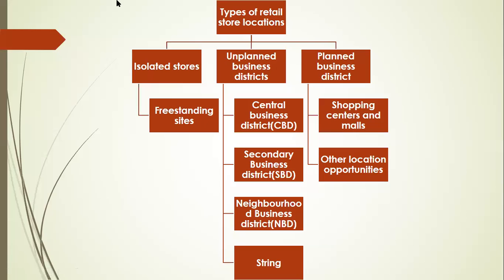First one is isolated stores. Next is unplanned business district. After that we have planned business district. Now yesterday we learned what are isolated stores and freestanding sites. In isolated stores, the shops will not be connected to any other shop, so they have their own business. They usually prefer branded stores or branded products.